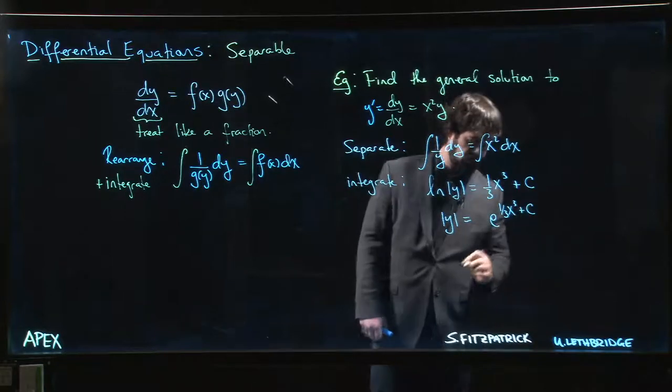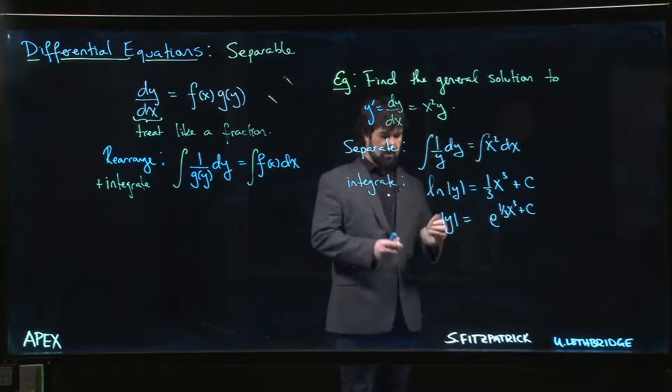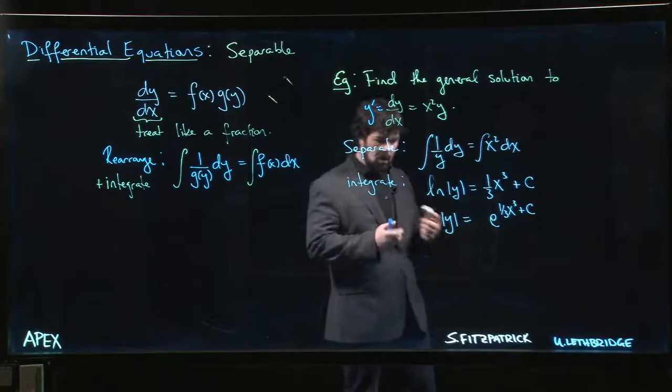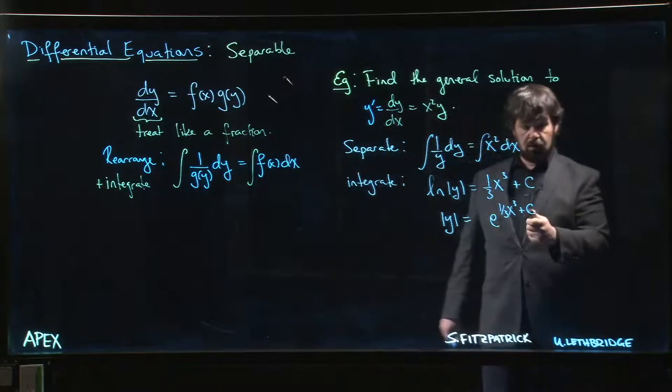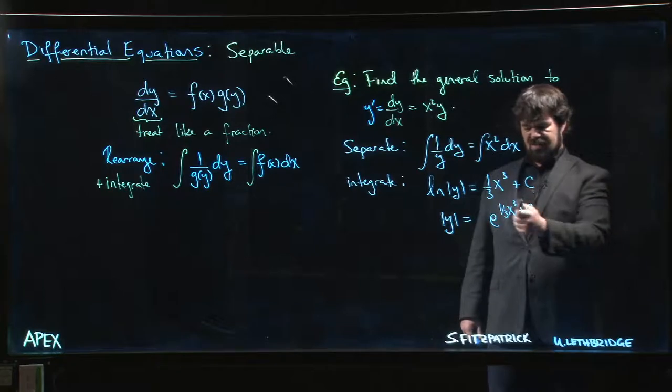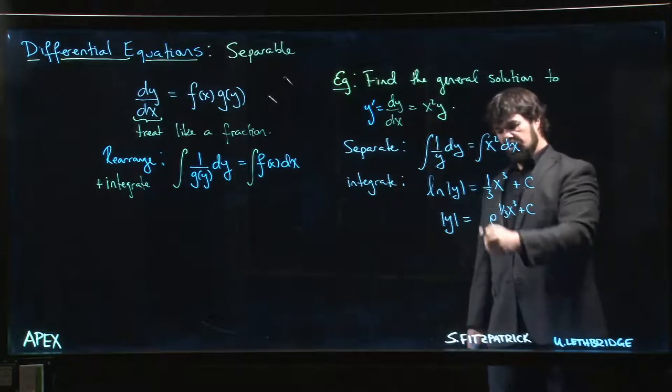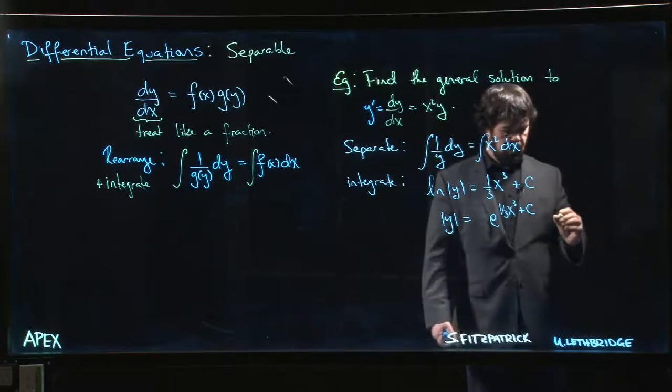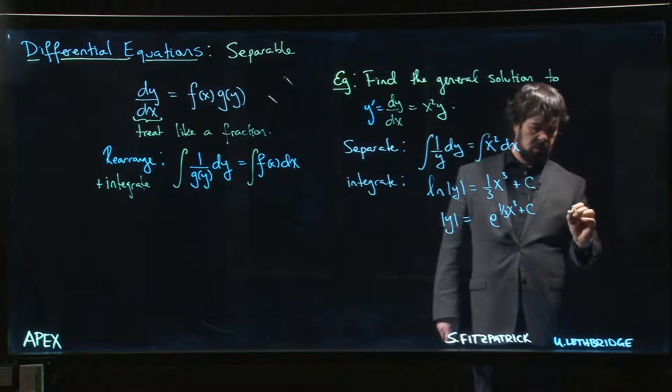And again we want to account for the fact that that constant, we don't like having it up there, it's nicer to have it out front. So we might want to introduce something like y_naught is equal to e to the c.